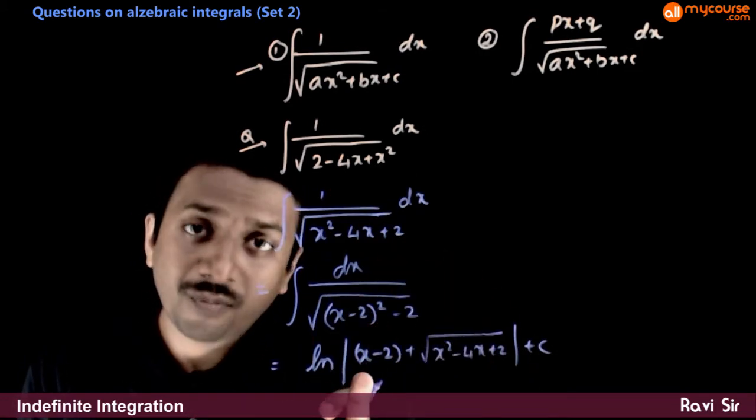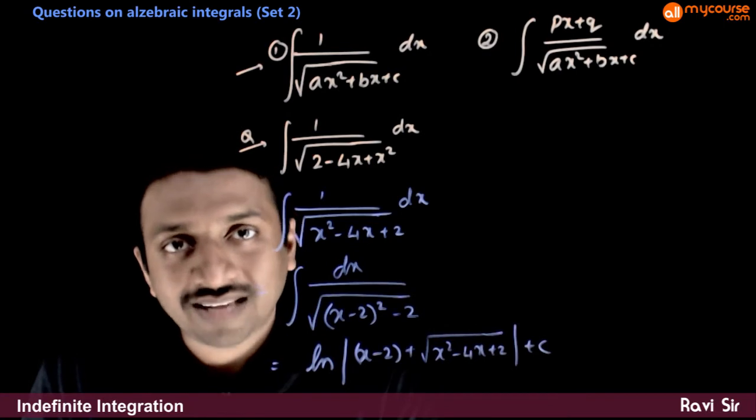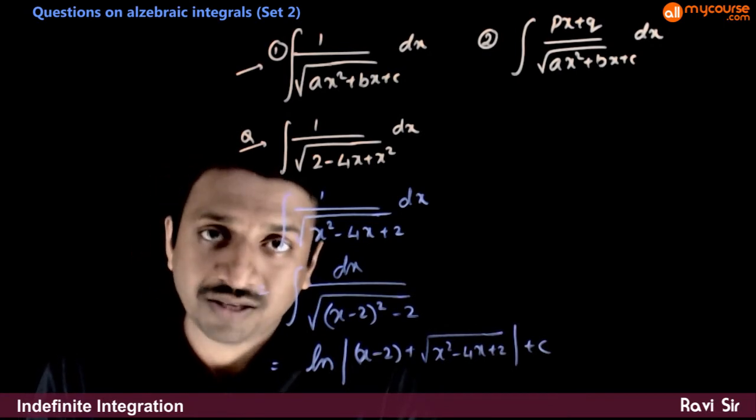So, log of mod of x minus 2 plus root of x square minus 4x plus 2 plus c.